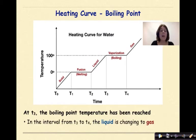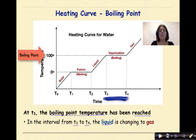At T3, the boiling point temperature has been reached. In the interval from T3 to T4, the liquid is changing to a gas. And again, this is known as vaporization. We'll see boiling. Both phases are present during this time interval. From T3 to T4, you'll notice both liquid and gas being present.